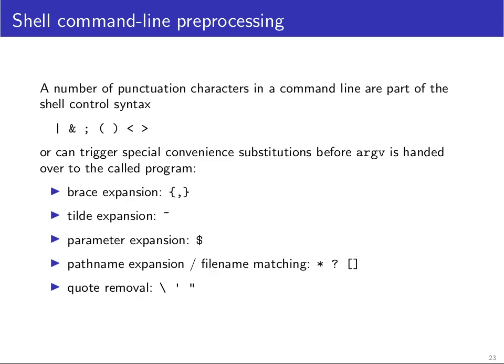We have already seen that a number of punctuation characters have a special meaning in the shell command line syntax. Some of these are part of the shell control syntax. For example, the semicolon is used to separate commands that are to be executed in sequence. The less than and greater than signs are used for file redirects and we've seen the pipe symbol as well as the logical OR and logical AND operation for conditional execution.